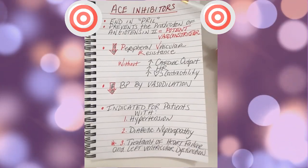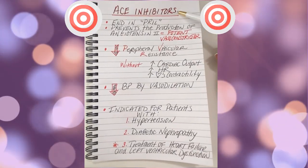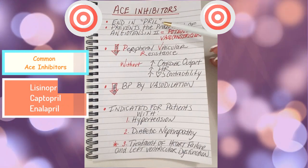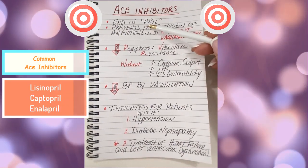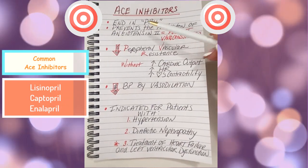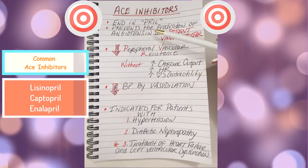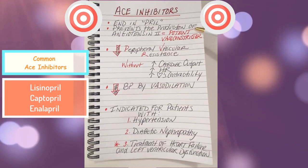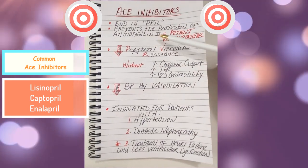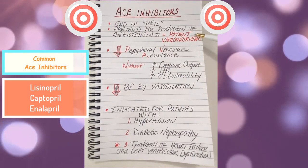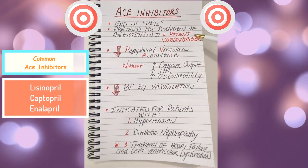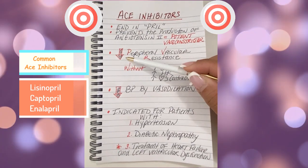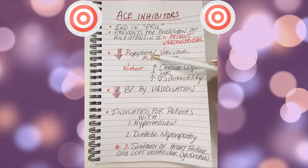Let's review ACE inhibitors. ACE stands for angiotensin-converting enzyme, and they all end in 'pril,' like lisinopril. It prevents the production of angiotensin 2, which is a major potent vasoconstrictor. Vasoconstriction causes narrowing of the vessels, which increases blood pressure.